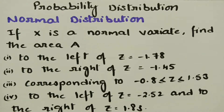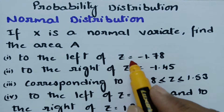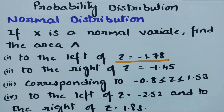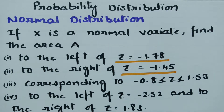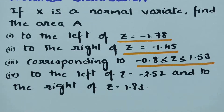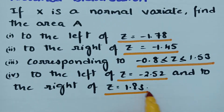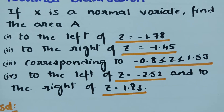This video is on normal distribution. We are going to solve a problem where x is a normal variate and we have to find: (a) the area to the left of z = -1.78, (b) to the right of z = -1.45, (c) corresponding to -0.8 ≤ z ≤ 1.53, and (d) to the left of z = -2.52 and to the right of z = 1.83.